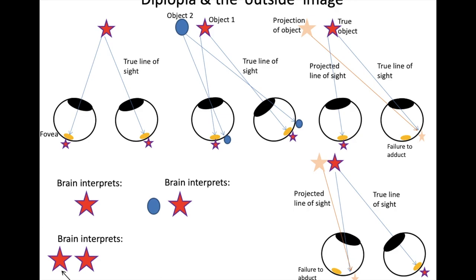And this is why it is always a problem eye, the one with the movement restriction, which gives you the lateral image in diplopia. I do hope that makes things clearer.